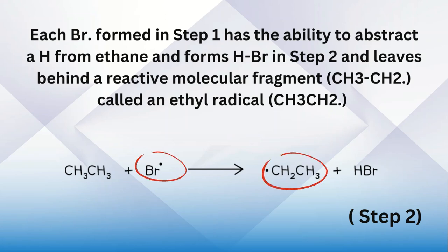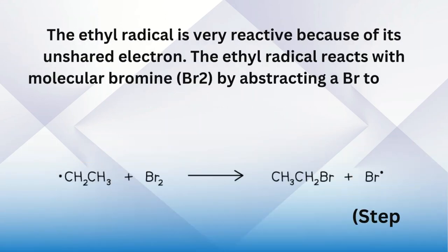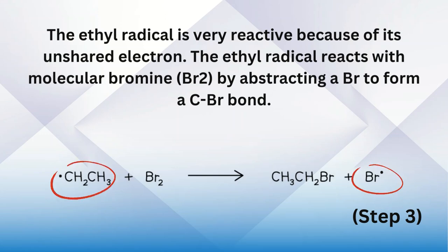The ethyl radical is very reactive because of its unpaired electron. The ethyl radical reacts with molecular bromine Br₂ by abstracting a bromine atom to form a carbon-bromine bond in step three.